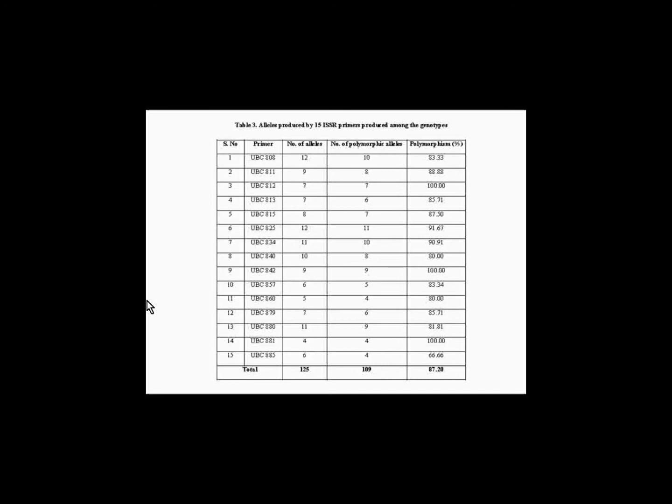Molecular diversity using ISSR primers yields a total of 125 alleles, of which 109 were polymorphic. The level of polymorphism was found to be 87.34%. The maximum number of amplicons was generated by the primers UBC825 and the minimum number of amplicons was generated by the primers UBC885 and UBC881. The variation observed in the ISSR profile for the marker and specific bands were observed in the genotypes for the specific primers.